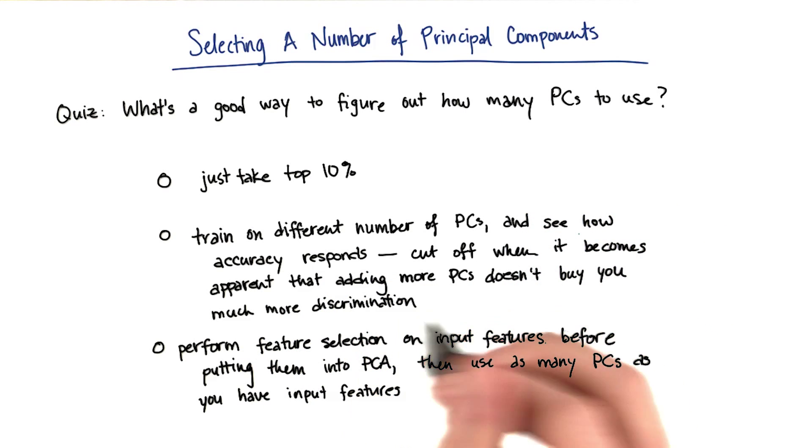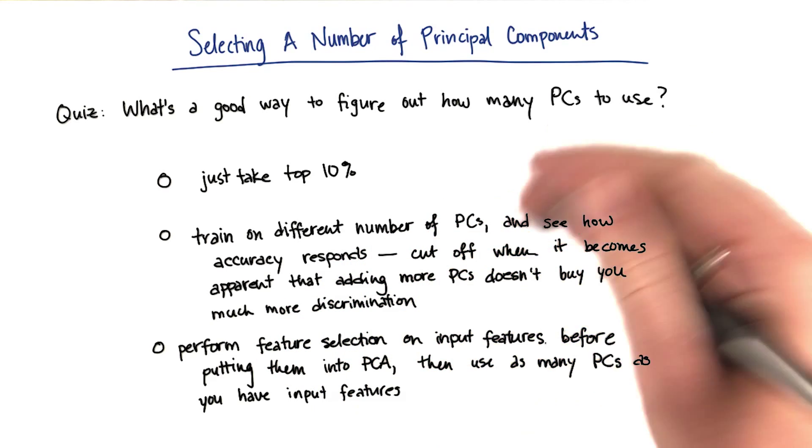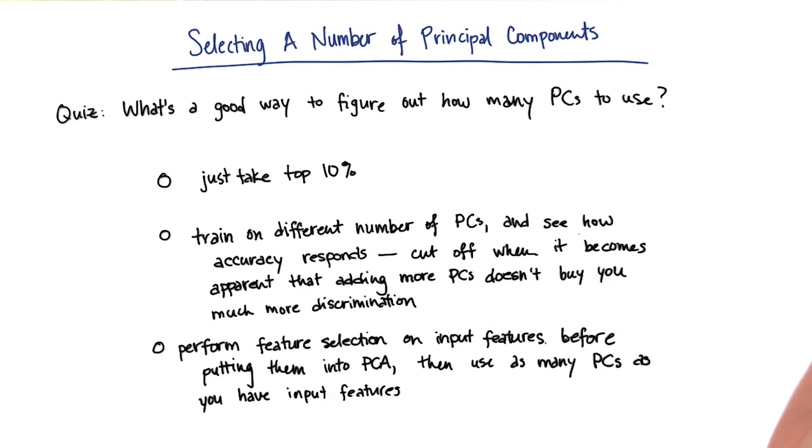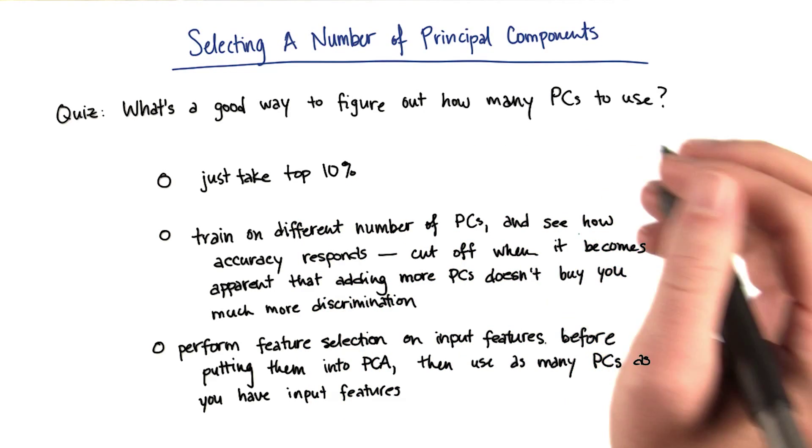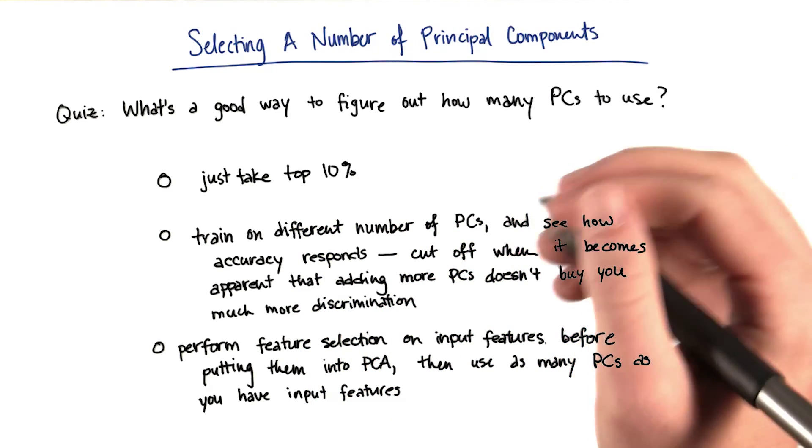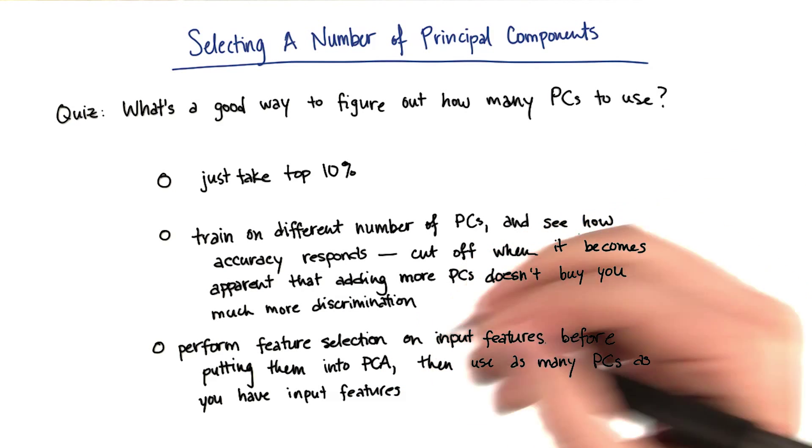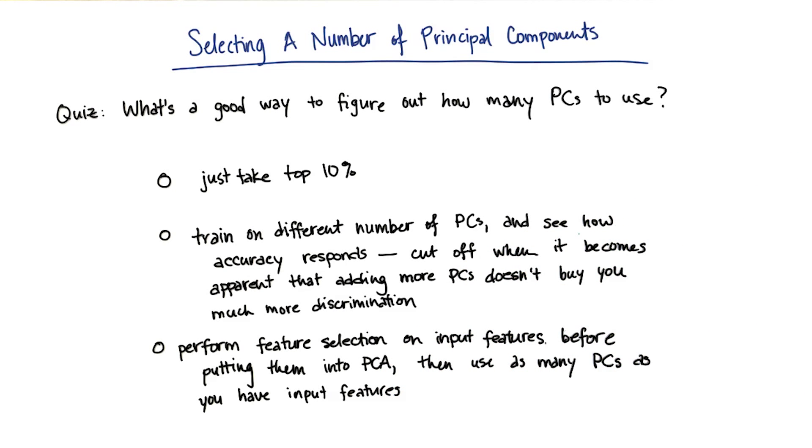The second option is that you can train on a different number of principal components and then see how the accuracy responds for each of those possible numbers. And then once you do this several times, it'll become clear that there's a point of diminishing returns where as you add more principal components, you don't get much more in terms of discrimination. And that you should cut off once you start to plateau.